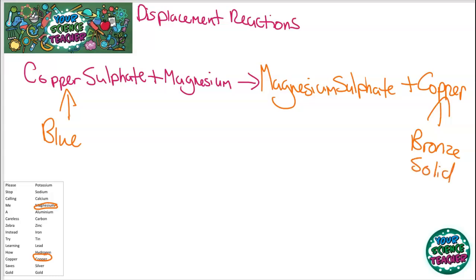So, you might see a couple of observations during this practical. That blue solution is going to discolorize. And you might see a bronze solid forming in this experiment. You might say also, why does this happen? Why does this displacement happen? And we can actually explain that by looking at half equations.